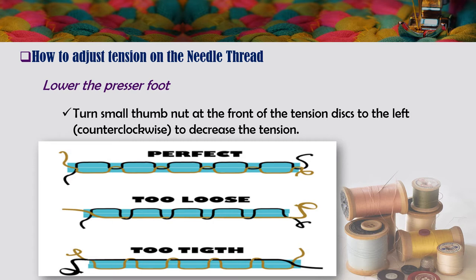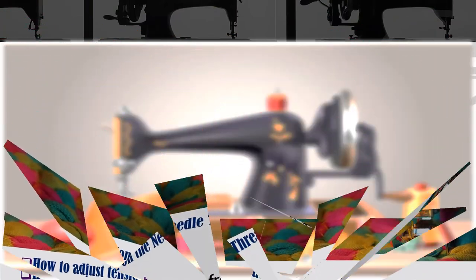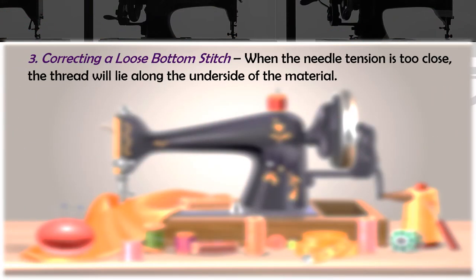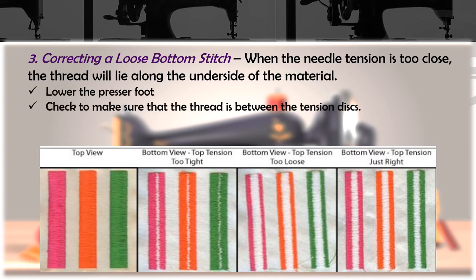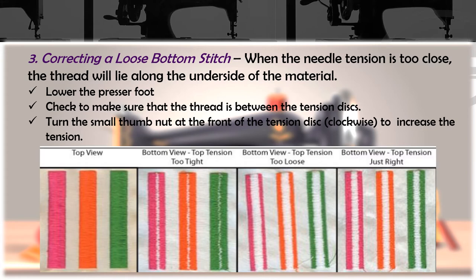How to adjust tension on the needle thread: lower the presser foot, then turn the small thumb knob at the front of the tension disc to the left (counterclockwise) to decrease the tension. For correcting a loose bottom stitch: when the needle tension is too loose, the thread will lie along the underside of the material. Lower the presser foot, make sure the thread is between the tension disc, then turn the thumb knob clockwise to increase the tension.